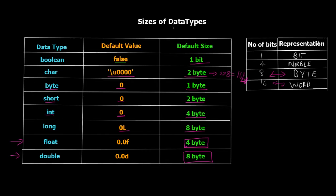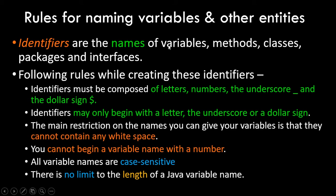You don't have to memorize the sizes — this is just for reference. Moving on, the last part covers rules for naming identifiers. Identifiers are the names we assign to variables, methods, classes, packages, and interfaces. Rules: identifiers must be composed of letters, numbers, underscore, and dollar sign. They may only begin with a letter, underscore, or dollar sign. No white spaces are allowed in the name, you cannot begin with a number, all variables are case sensitive, and there is no limit to the length of a Java variable name.